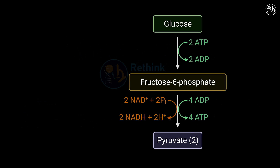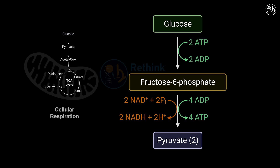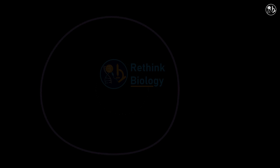Glycolysis is an ancient metabolic pathway that evolved long ago and is found in almost all living organisms. It is the first step of cellular respiration, which is the process of extracting energy from organic molecules. However, glycolysis does not require oxygen and can also occur in anaerobic conditions where oxygen is absent or limited. Glycolysis takes place in the cytoplasm of the cell.